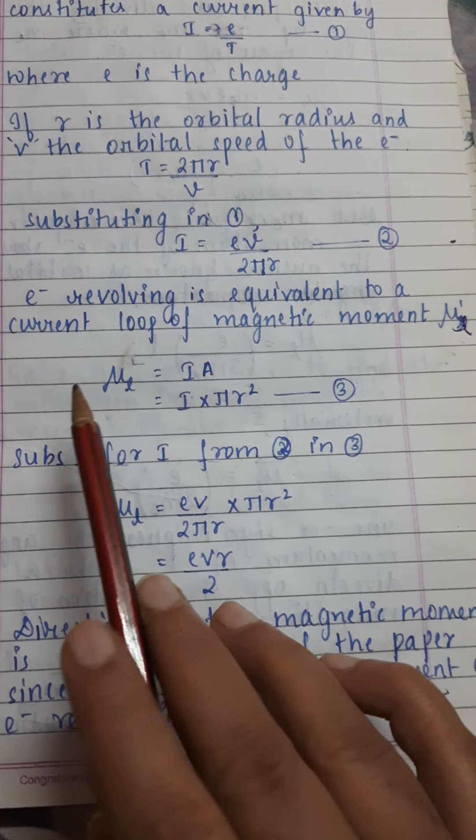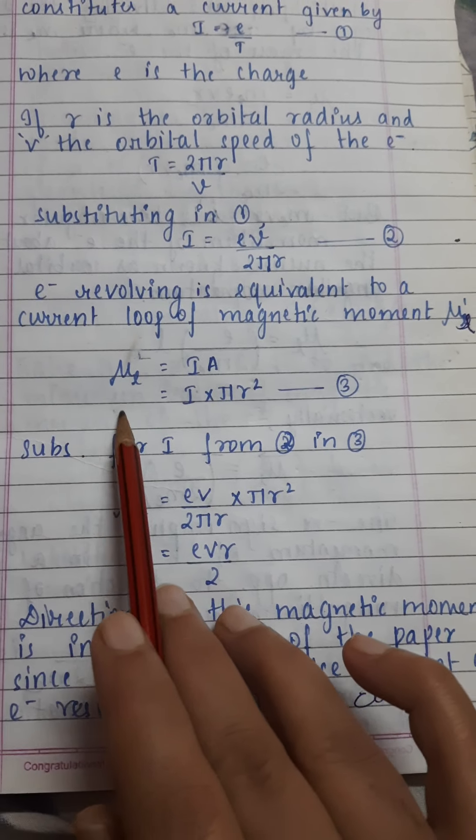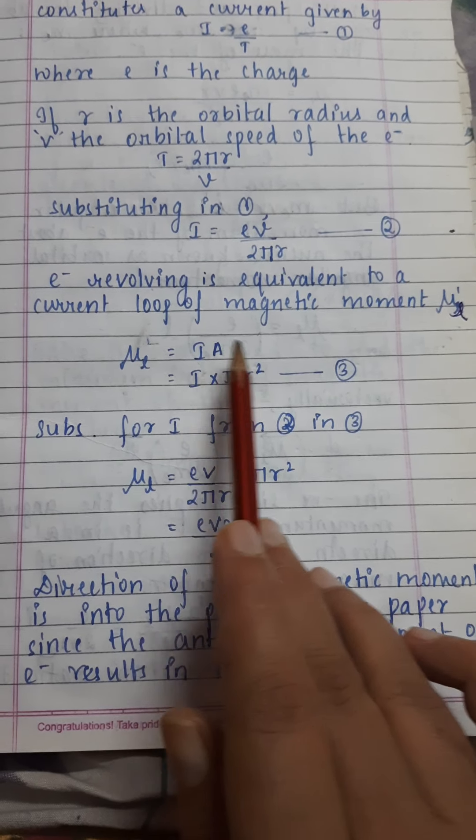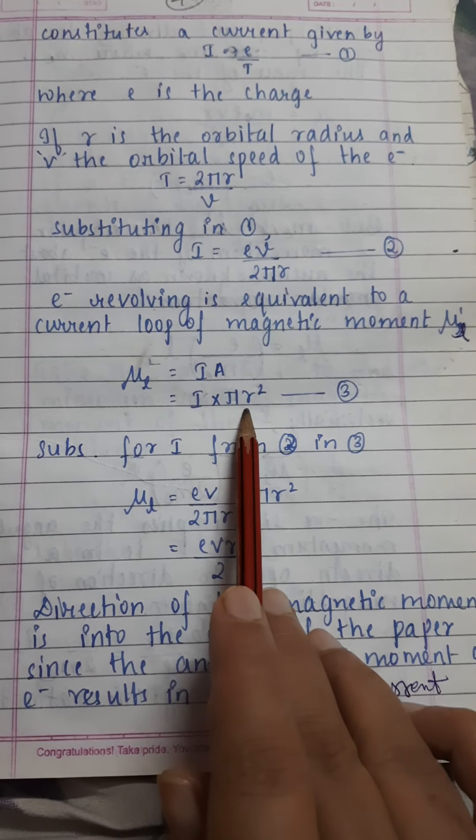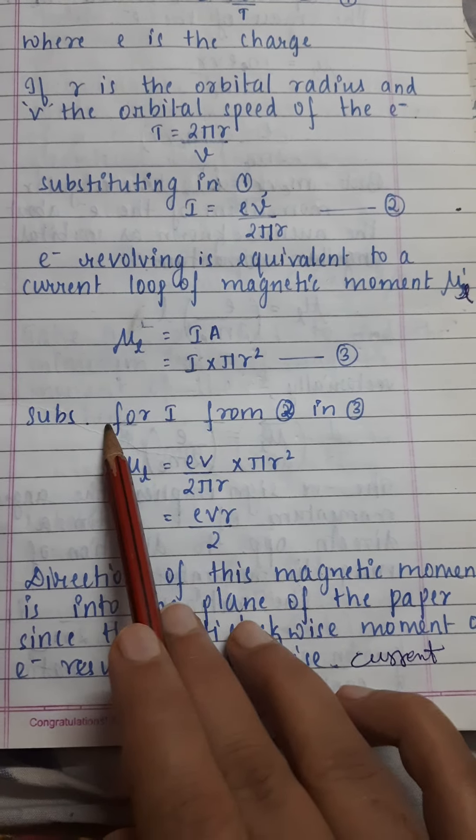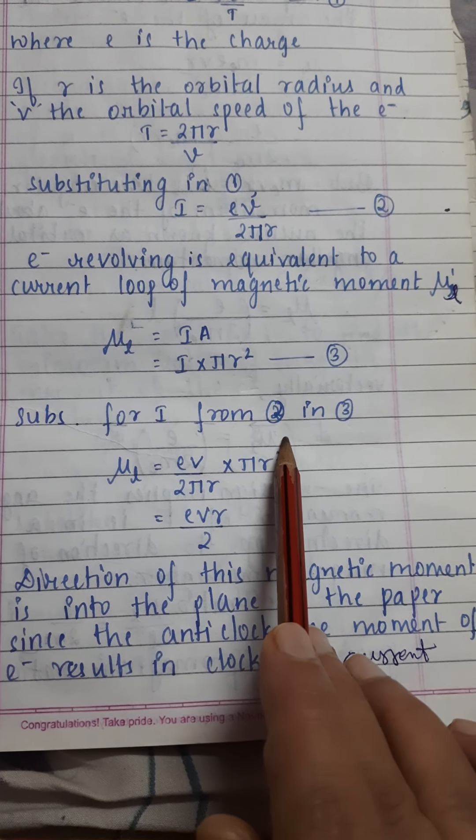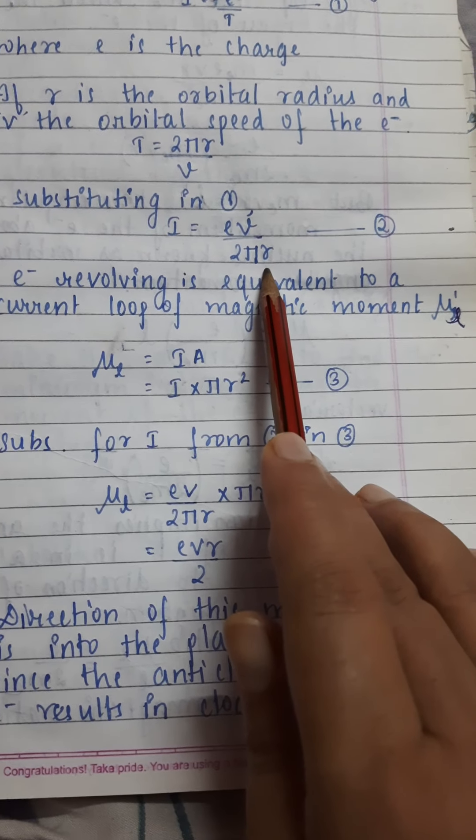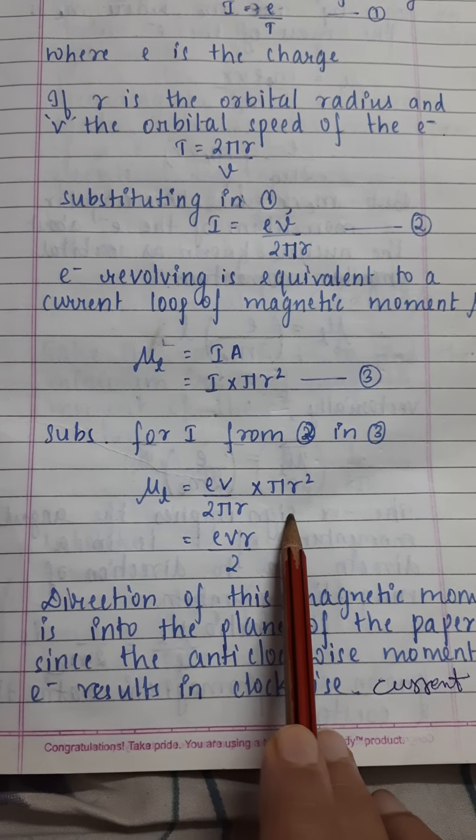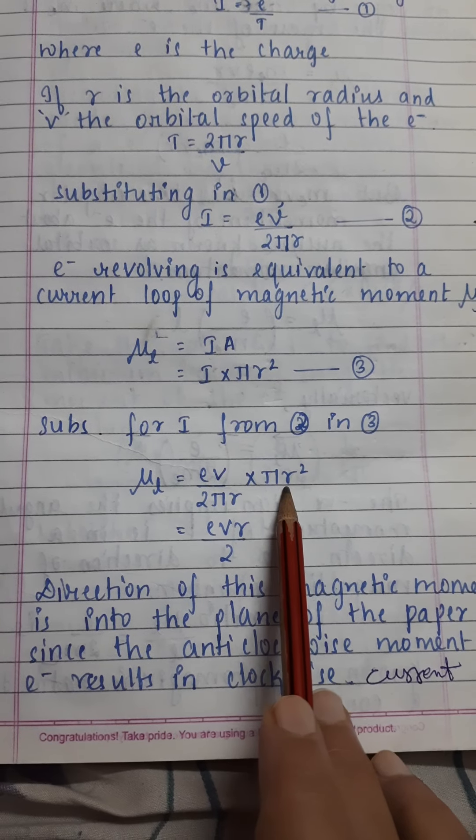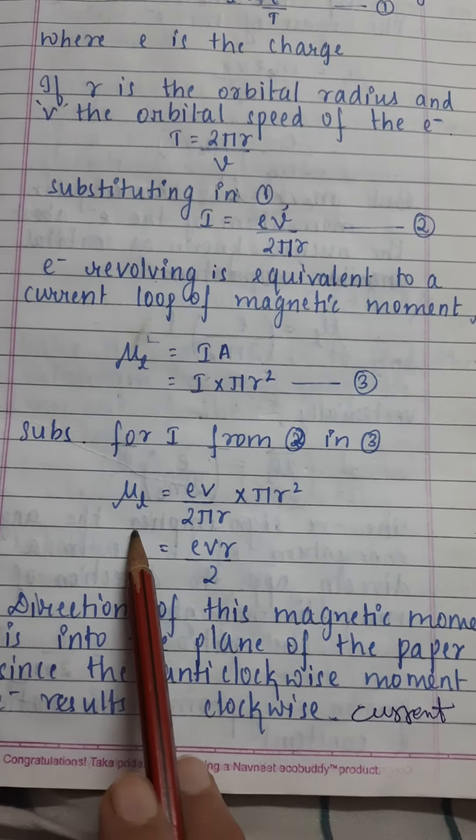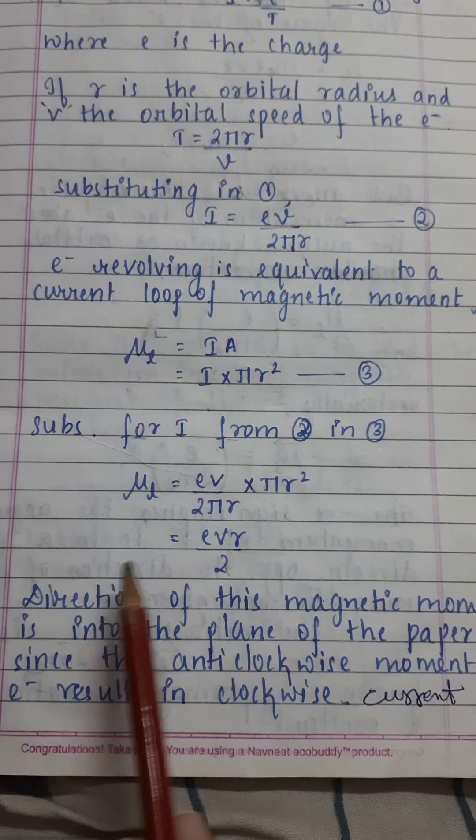The evolving electron is equal to a current loop of magnetic moment μl. The formula is magnetic moment equals current into area, which is current into πr². Substituting for i from the second equation, we get ev/(2πr) into πr². π and r cancel, giving us evr/2. This is the final value of μl, the magnetic moment of electron.